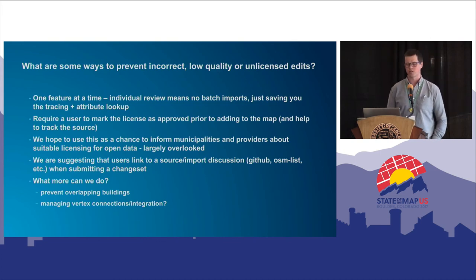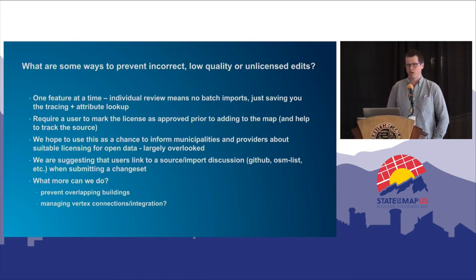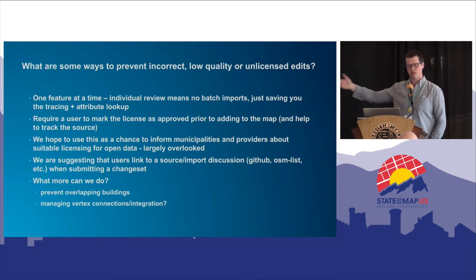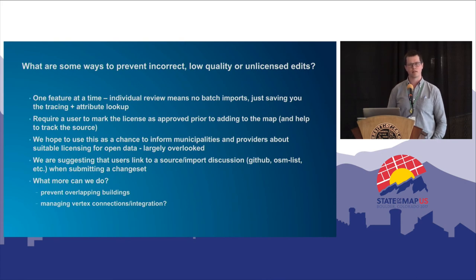We had a lot of back and forth on a previous issue in the iD repository on how to prevent incorrect, low-quality, or unlicensed edits. One feature at a time with individual review is a big part of that. We require the user to mark the license as approved before adding it to the map, and we're hoping to use this to educate users about proper licensing — a lot of local governments think their data is public and open but don't proactively say so. We're also suggesting users link to a changeset import discussion and doing things to prevent overlapping buildings.